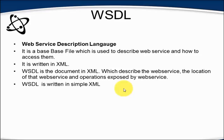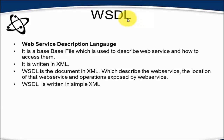WSDL stands for Web Service Description Language. It's a base file which is used to describe a web service and how to access it. It is a file in which everything is mentioned about the SOAP service: what functionalities are provided by the web service, how we can access that web service, what kind of response we are going to get, and what kind of input or request we can send. Everything about the web service is mentioned in this WSDL file, which is again developed in XML format.